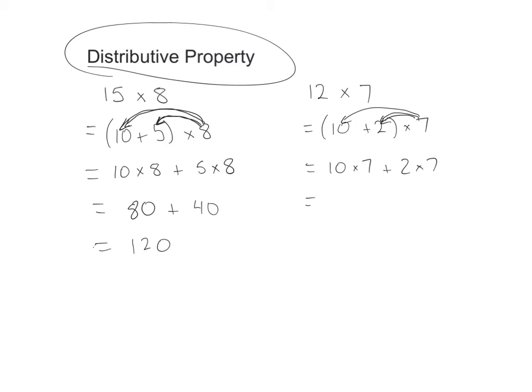So now let's do those multiplications. 10 times 7, 70. 2 times 7, 14. Add them up, we get 84.